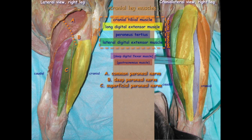Here's another interesting condition referred to as string halt. We see the horse hyperflex the limb, but the downward movement of the limb is normal — as it lifts the limb, it's more exaggerated. This is commonly seen in Australia due to sweet pea poisoning, but it can also be caused by a neuropathy of either the sciatic, peroneal, or tibial nerves. In some horses, a tenectomy — cutting the tendon of the lateral digital extensor — seems to be effective.